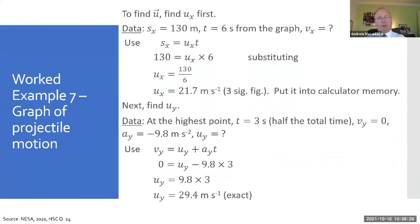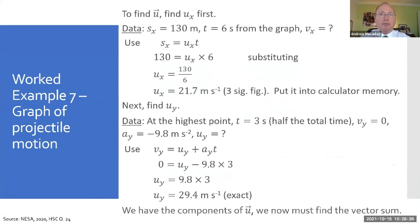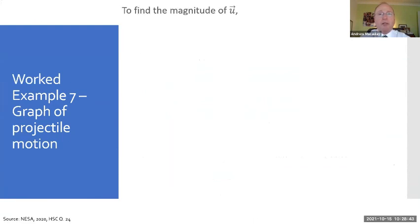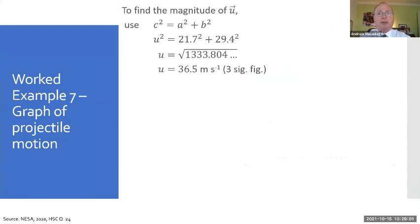We've got two components now in the x and the y direction. We can now find u, which is the velocity vector. So we just do the vector sum and to do the vector sum, we find the magnitude using Pythagoras theorem. So substituting, u² = 21.7² + 29.4². Remember to use your memory on the calculator. Add them together, take the square root and you get 36.5 meters per second.